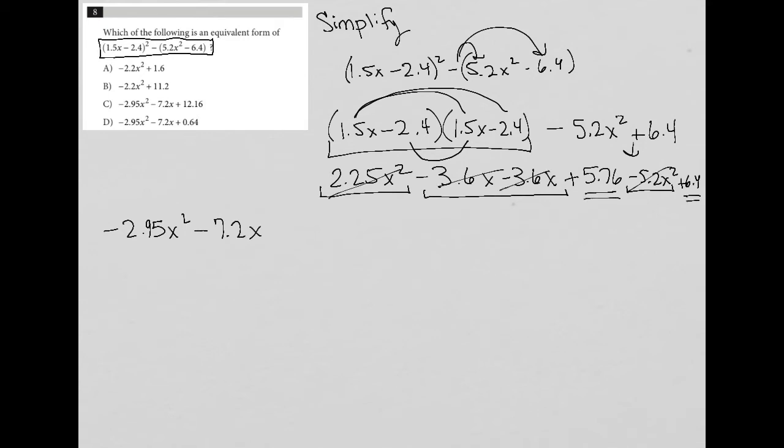And I have 5.76 plus 6.4. So 5.76 plus 6.4 in my calculator. And I get positive 12.16.